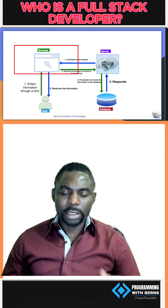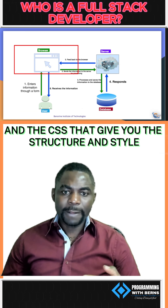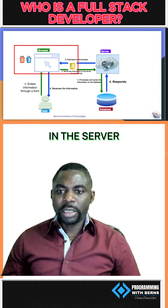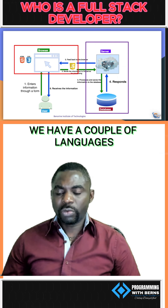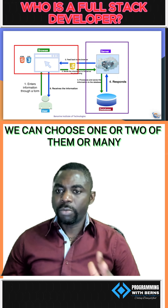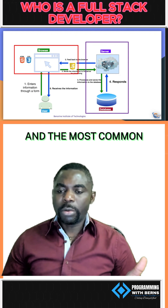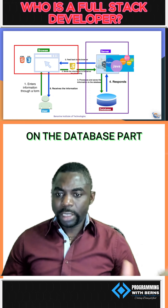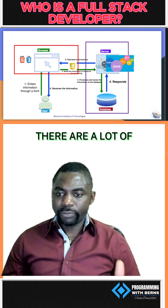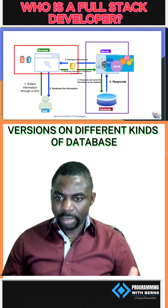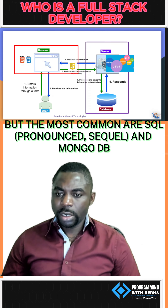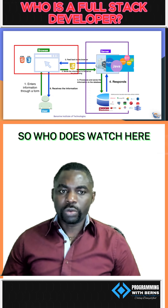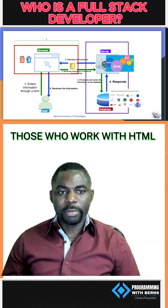These are the technologies used in the different parts. In the browser we usually have HTML and CSS, which give you the structure and style. JavaScript is the one that makes interactivity between the browser and the server. In the server we have a couple of languages — the most common are Python, Java, JavaScript, PHP, C++, and Perl. On the database part, the most common are SQL and MongoDB; the rest are just dialects of those.